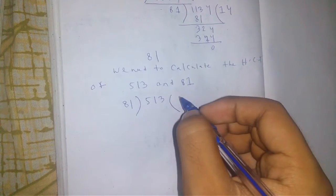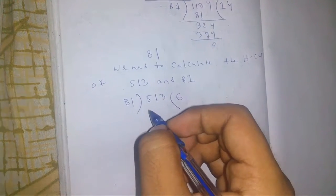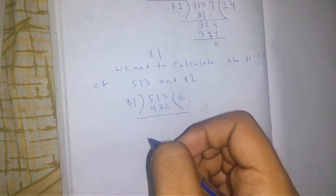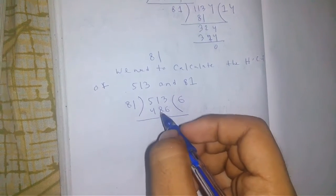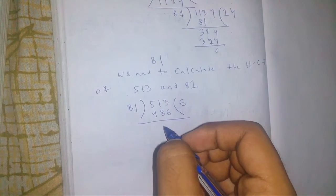81 into 6 equals 486. The remainder is 27.